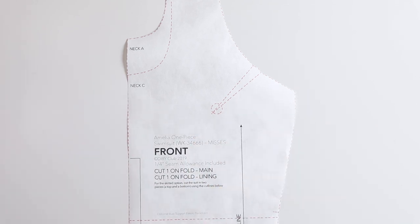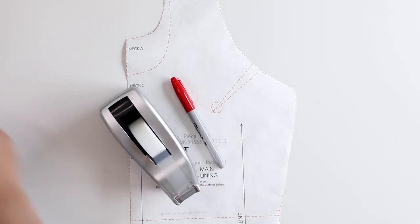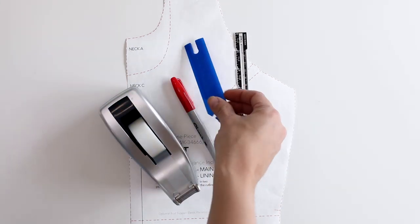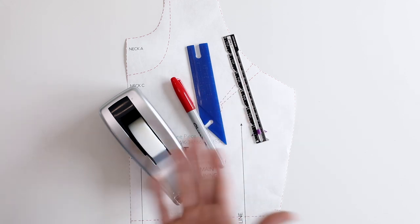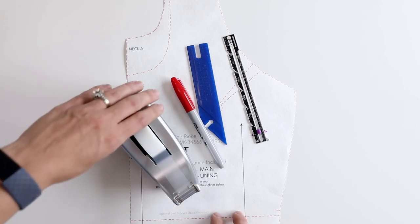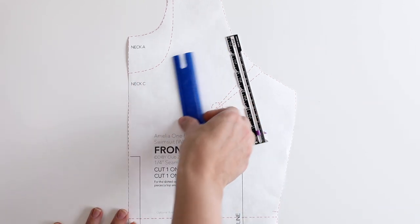Before you get started you're going to need a few things. You'll need a marker or a pen, some tape, a ruler or seam gauge and some sort of a straight edge and then of course you will need some paper to be putting on the back of everything so that we can make our adjustments and have a finished pattern to work with.